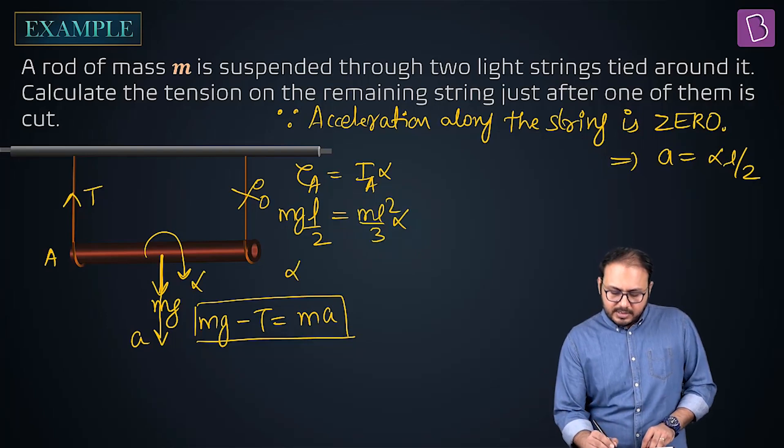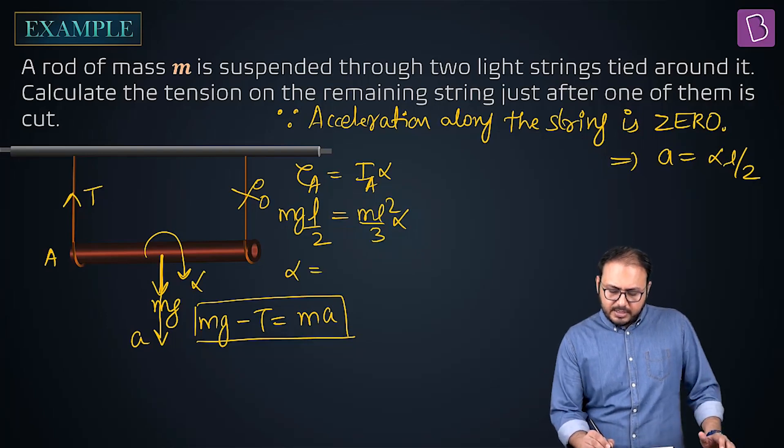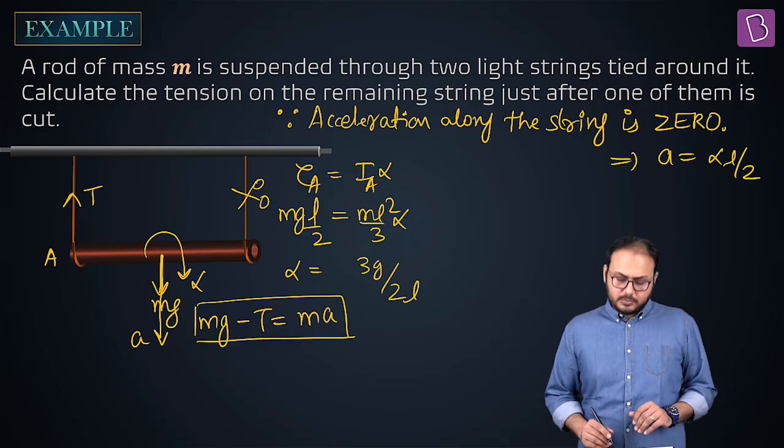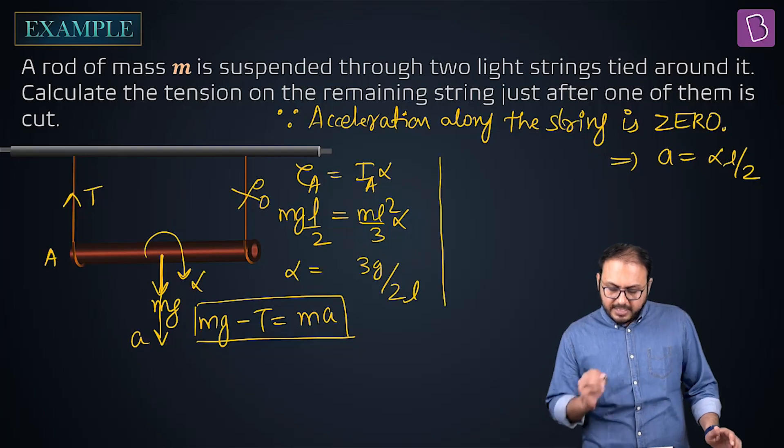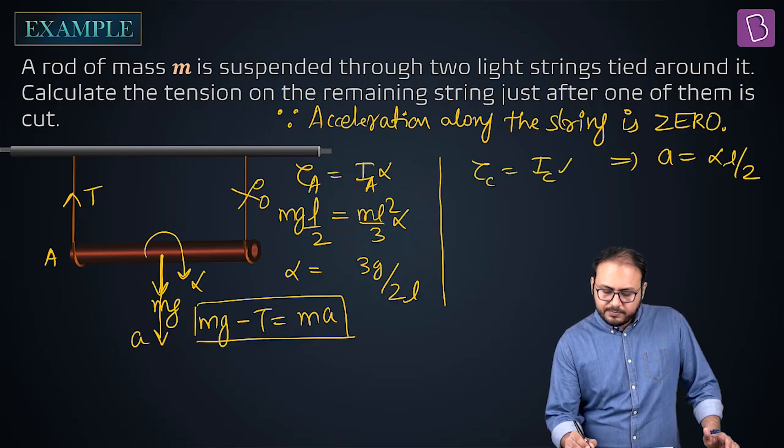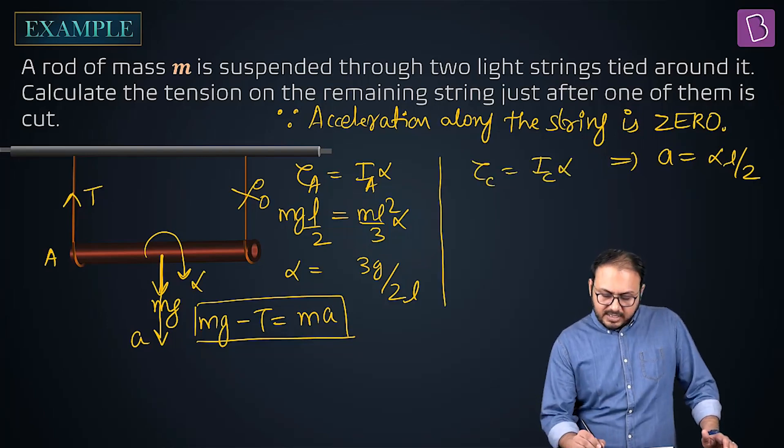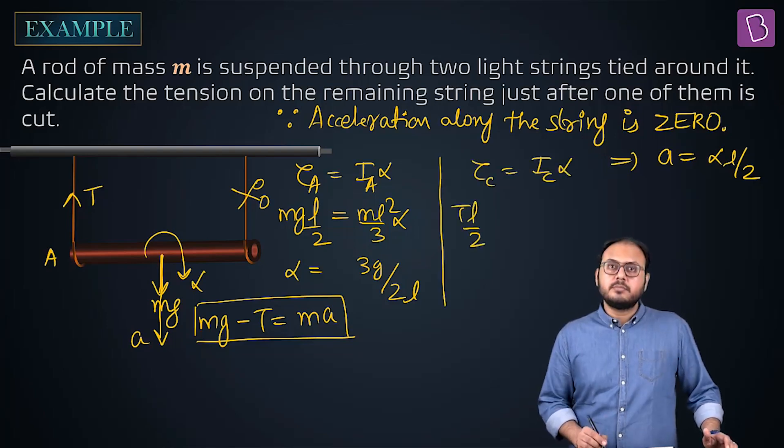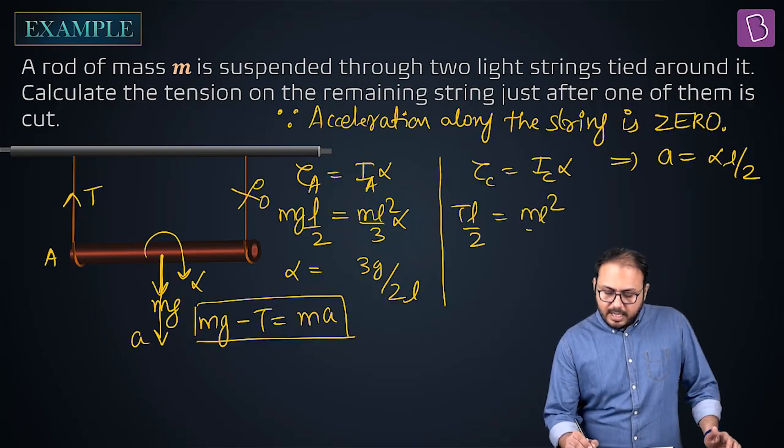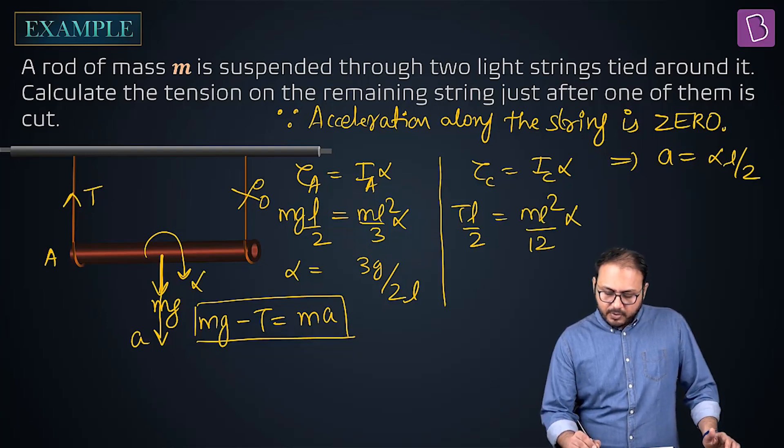Yeah, that's correct. So what is the alpha? Alpha comes out to be 3G by 2L. Okay fine. If I take torque about center mass, about center it is T L by 2. Why? Because Mg is passing through center, equal to ml square by 12 alpha. Or T equal to M alpha L by 6.